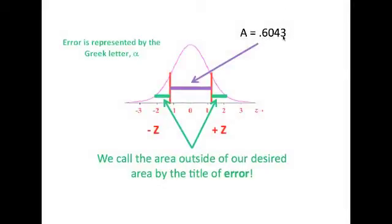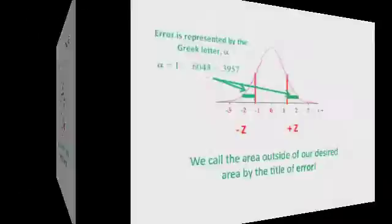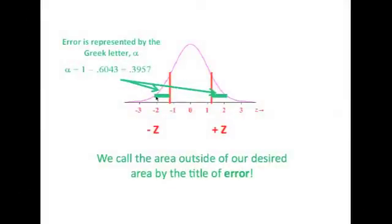For this particular problem, since A is equal to 0.6043, our error, represented by the Greek letter alpha, lies on each side of that specific area. And a negative Z-score and a positive Z-score will allow us to trap this area, and you have this particular error on each side. The error, which is of interest to us, alpha, is equal to the entire area under the curve, which is 1, minus this area, which we've identified here, of 0.6043. So our alpha is equal to 0.3957.